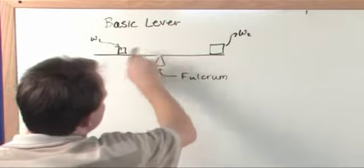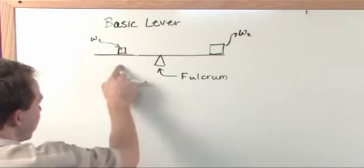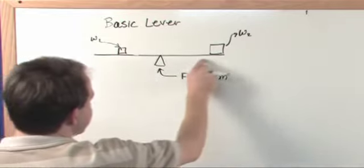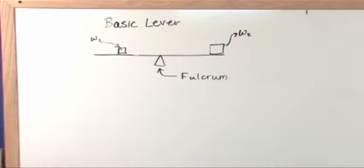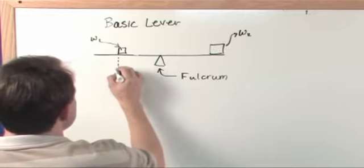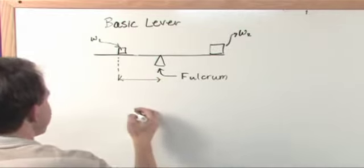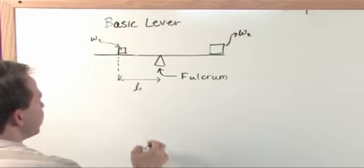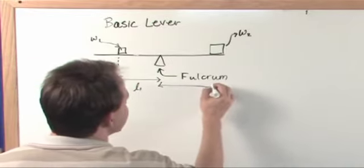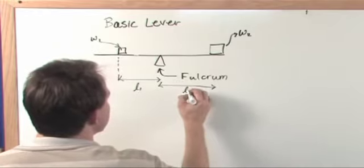Now, also, there could be different positions on this thing, just like you can play different positions on the seesaw. So this distance between box number one and the fulcrum is just called L1. And this distance here from here to the other box is L2.